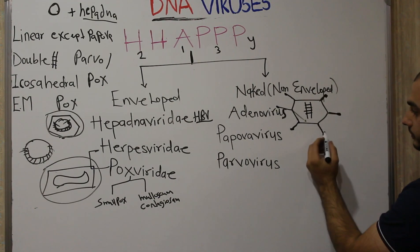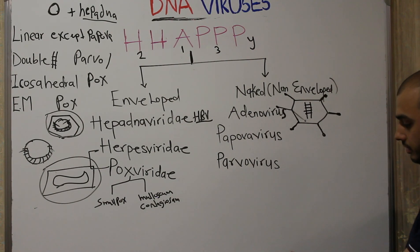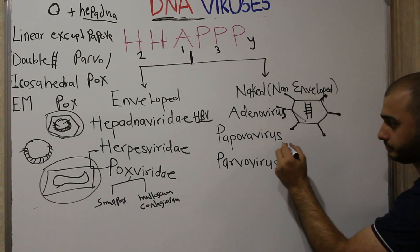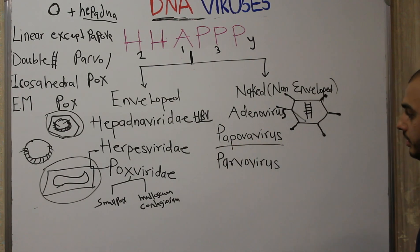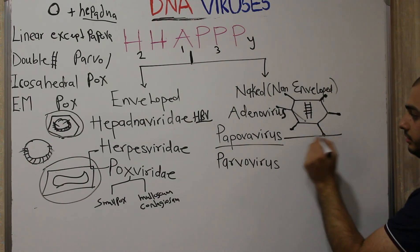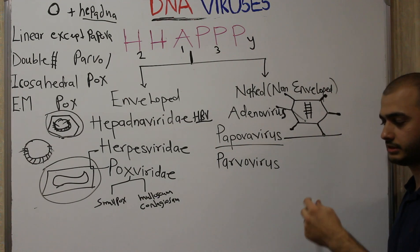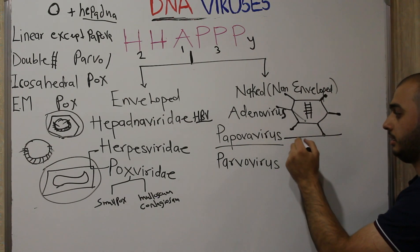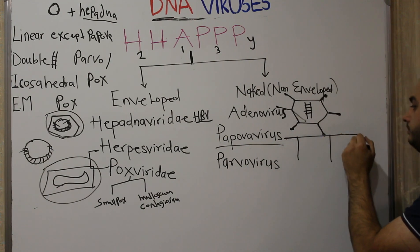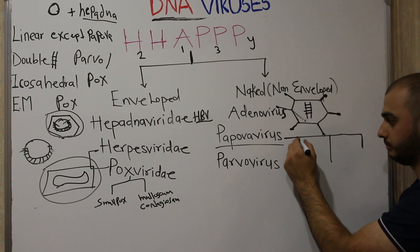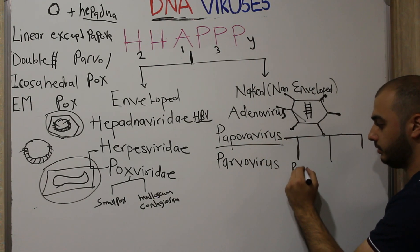Moving on to Papovaviridae: we already said it has circular DNA. It contains three subgroups — Papillomavirus, Polyomavirus, and BK/JC viruses — which we will discuss in detail in the next videos.